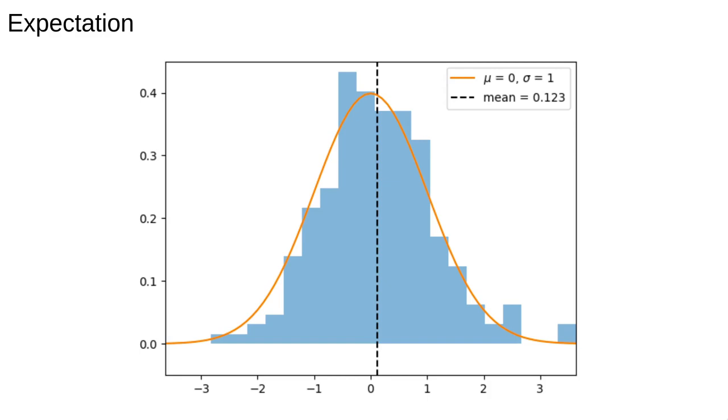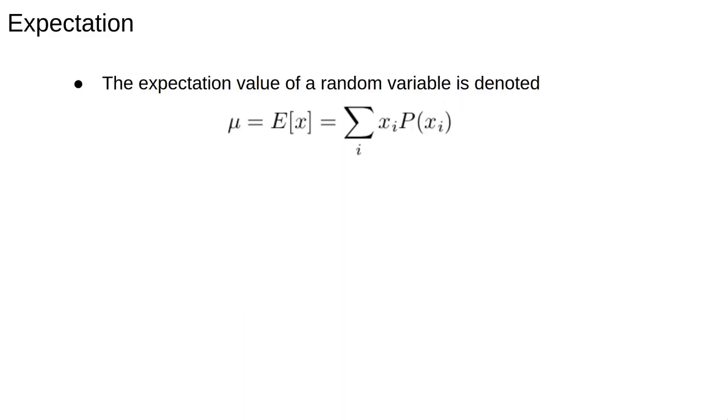We made the connection between data and probability distributions through what are called expectation values. We defined the expectation of a random variable as the sum of the values of the random variable times the probability of observing those values.